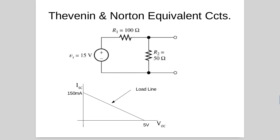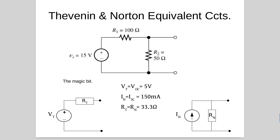We don't need to separately analyze for the network resistance because we already have the open circuit voltage and the short circuit current. If we plot these on a graph with open circuit voltage on the x-axis and short circuit current on the y-axis, the load line connects them. The slope is minus 1 over R, and since resistance is voltage over current, we flip the numbers: 5 volts over 150 milliamps gives us 33.3 ohms — the internal resistance of this network.